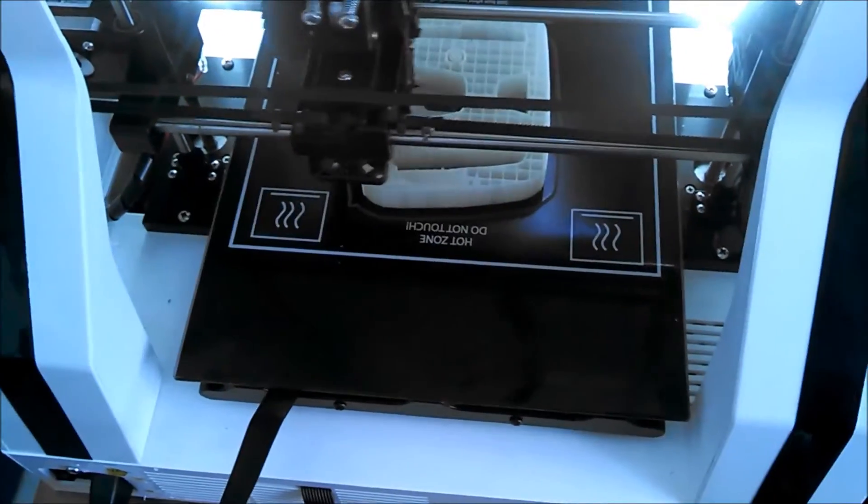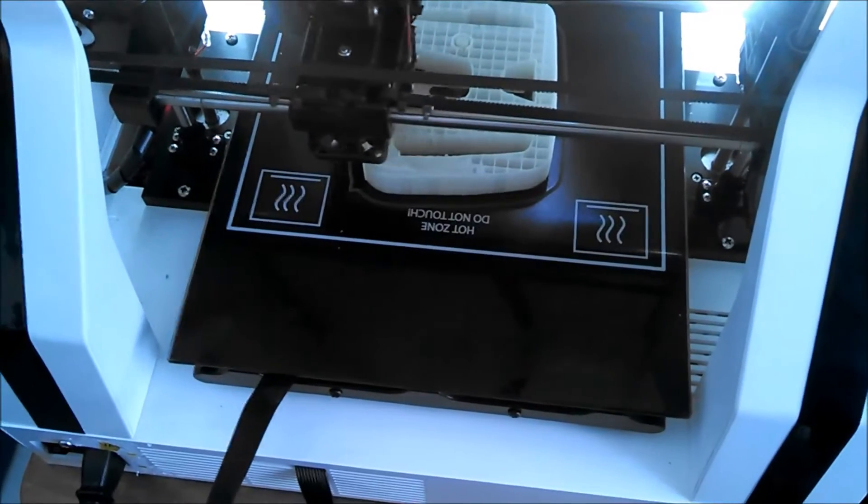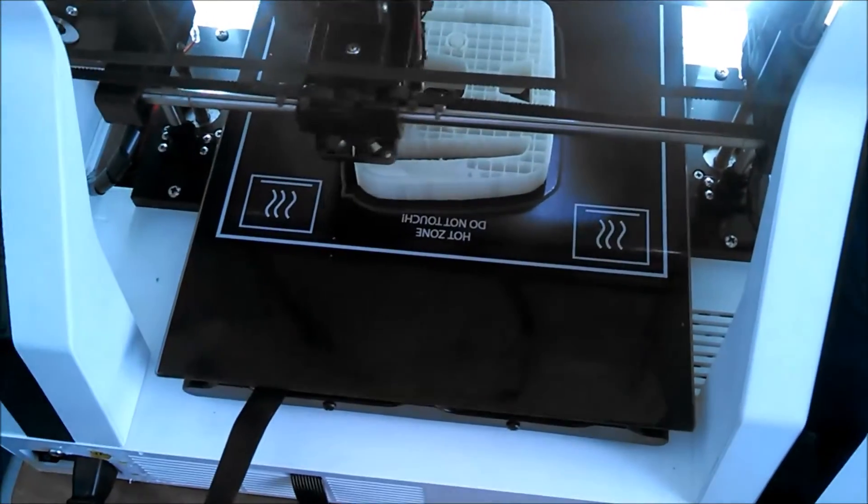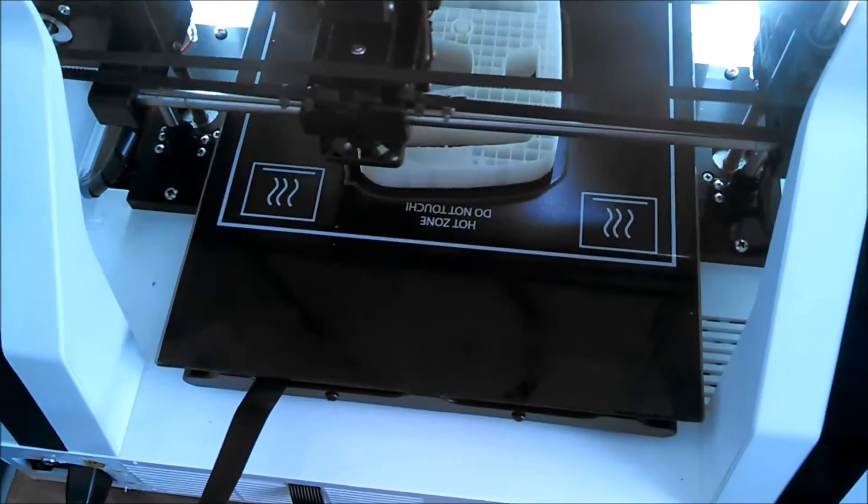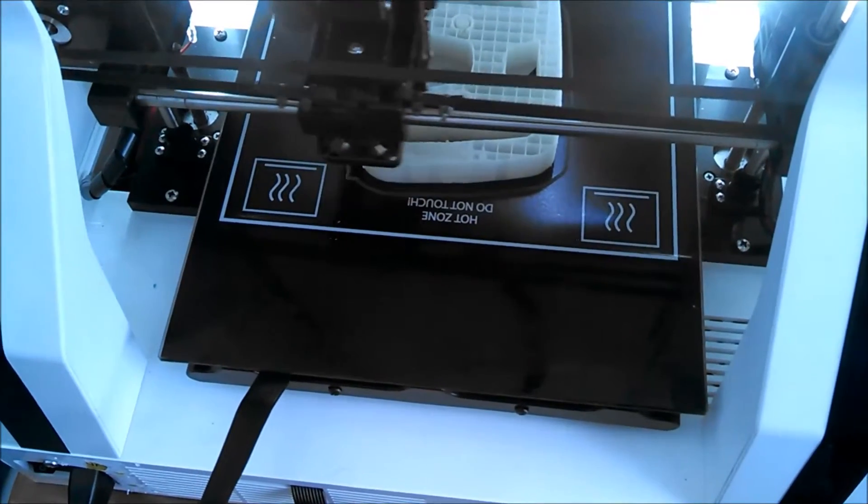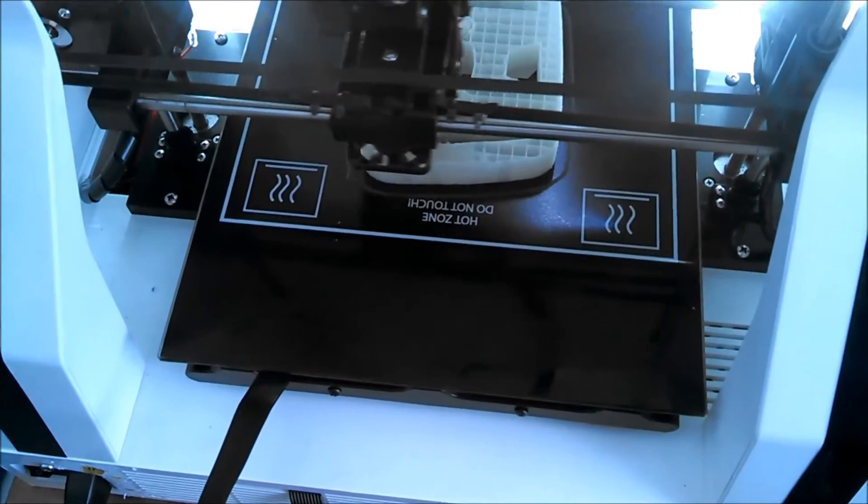We're printing the Honda grill mount emblem on the Robo 3D printer here. We've got most of the structure printed so far and we're starting to print the face.